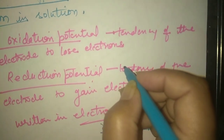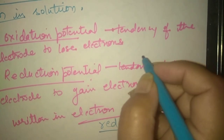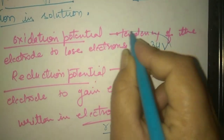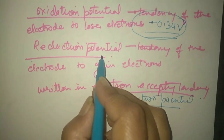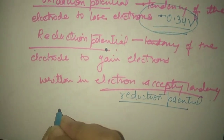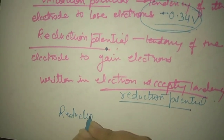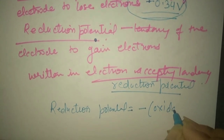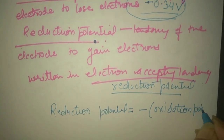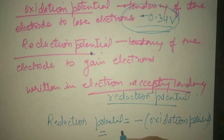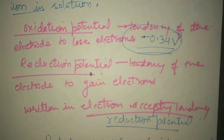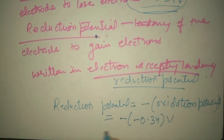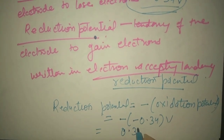How do we write potentials in the form of reduction potential? Suppose we are given the oxidation potential — for example, minus 0.34 volts. You have to convert it into reduction potential. Simply, reduction potential is equal to minus of the oxidation potential. In numericals, you will use the reduction potential; if oxidation potential is given, first convert it. So it will be minus of minus 0.34 volt, and the reduction potential will be 0.34 volt.